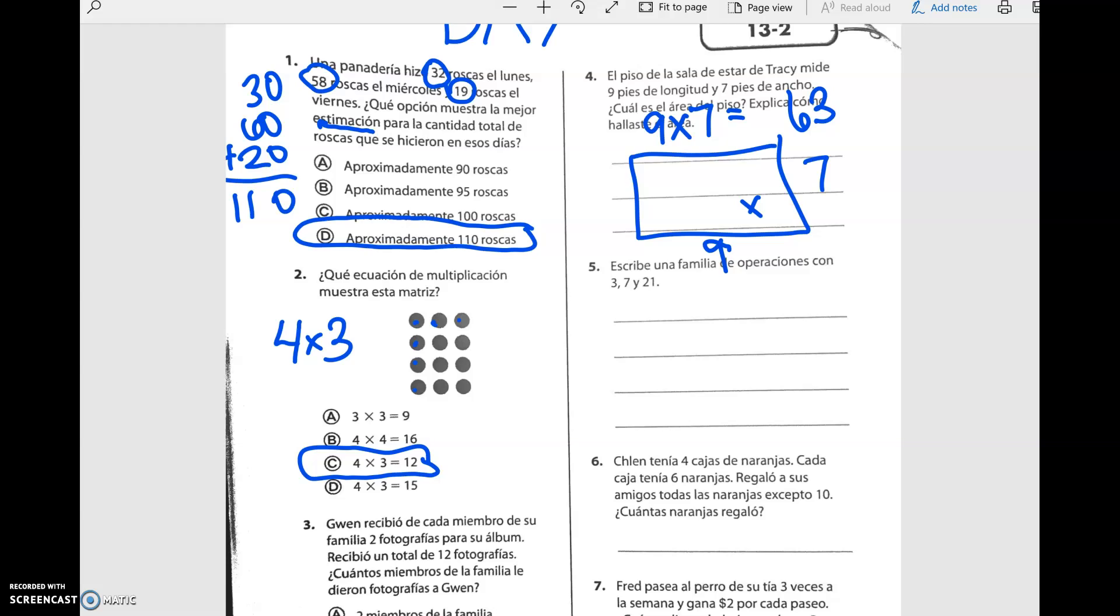El piso de la sala de estar de Tracy mide 9 pies de longitud, 9 pies y 7 pies de ancho. ¿Cuál es el área? We did this yesterday, right? On Monday anyways, day one. Vamos a multiplicar 9 por 7 es igual a 63. That is not the answer, correct? La respuesta correcta es 63 pies cuadrados. Always answer with that complete sentence if you've got space and you can.